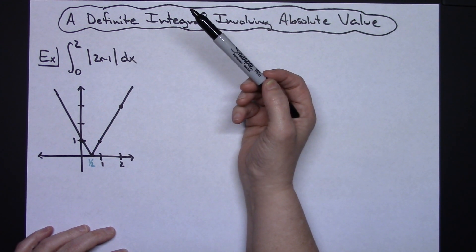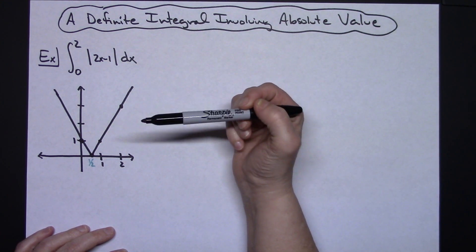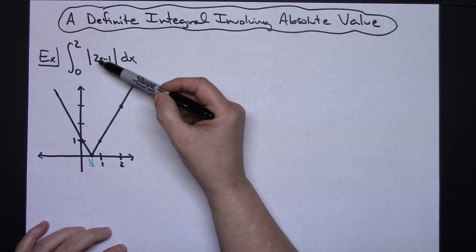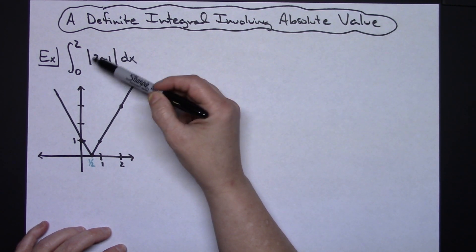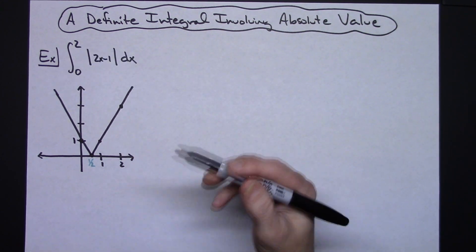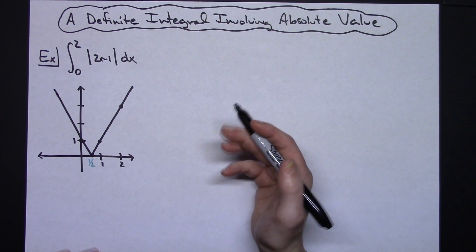Now you're going to stop and think about really what you're doing when you're integrating. You're trying to find basically that area under the curve. So if I can graph this and look at it between 0 and 2, then I'm going to kind of have an idea of what I'm looking at.